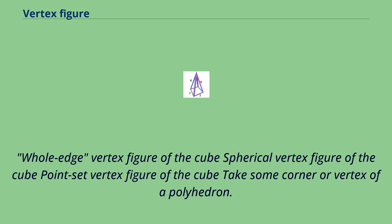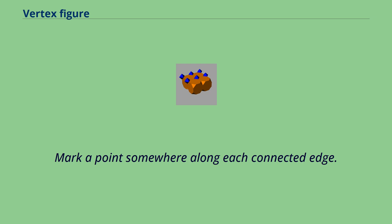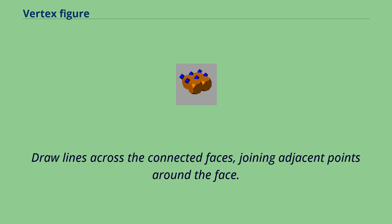Take some corner or vertex of a polyhedron. Mark a point somewhere along each connected edge. Draw lines across the connected faces, joining adjacent points around the face.